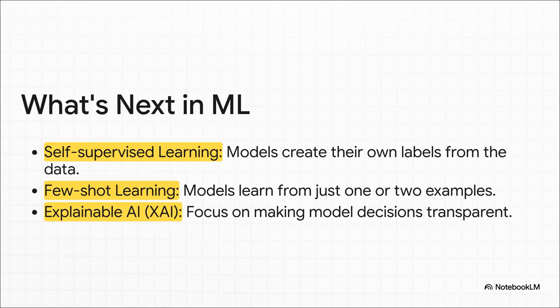And it doesn't even stop there. We're seeing some mind-blowing advances. Things like self-supervised learning, where a model is clever enough to create its own labels right from the raw data. Or few-shot learning, which is trying to get models to learn from just one or two examples, kind of like how we humans do. And through it all, there's this huge push to make these black boxes more transparent and understandable.